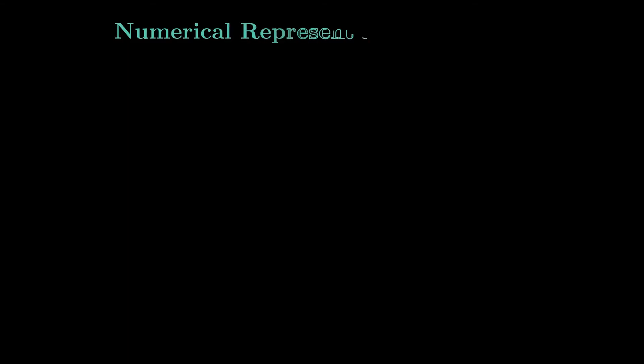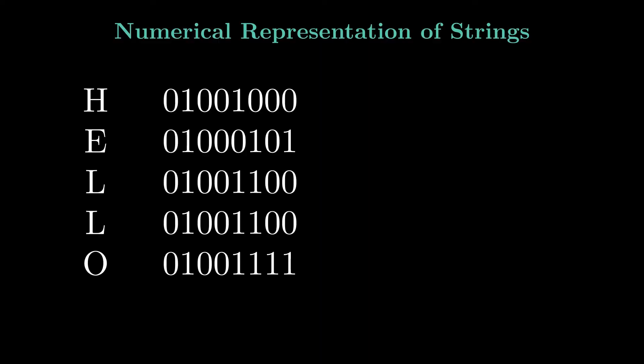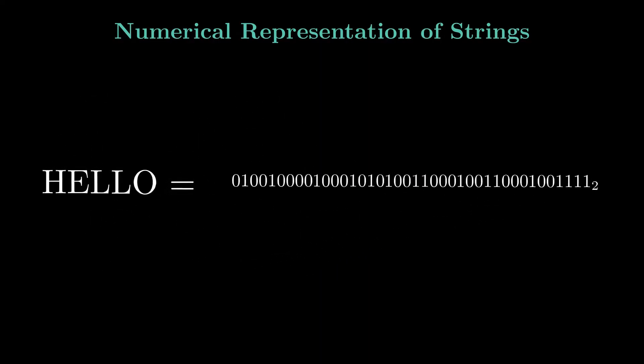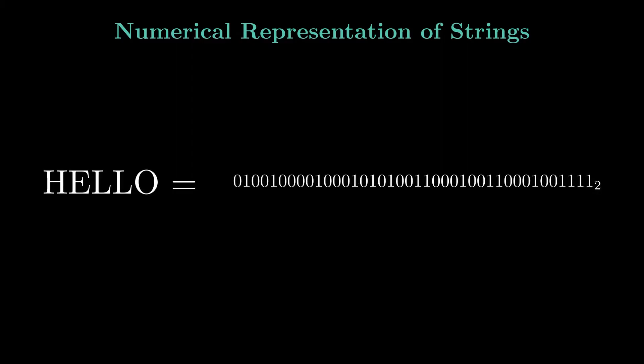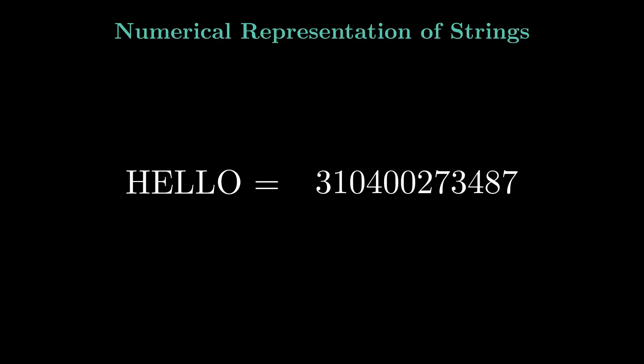Messages can be represented numerically by converting each character to its binary ASCII equivalent. For example, in the message hello, each character can be written as an 8-bit binary. By concatenating these binaries, the entire message forms a large binary sequence that can be interpreted as a single integer, which can be converted into a large decimal number representing the entire message.